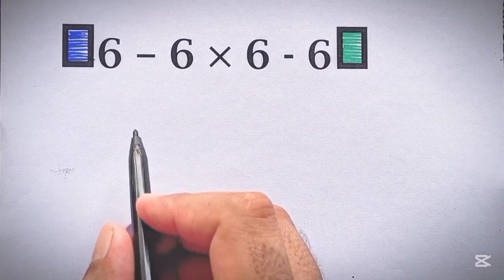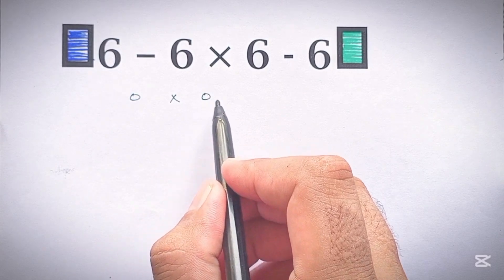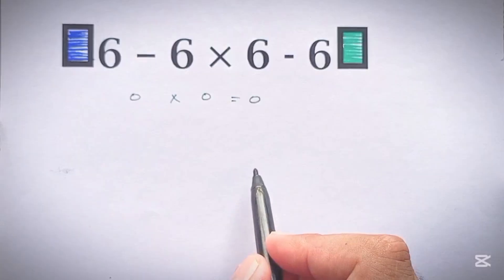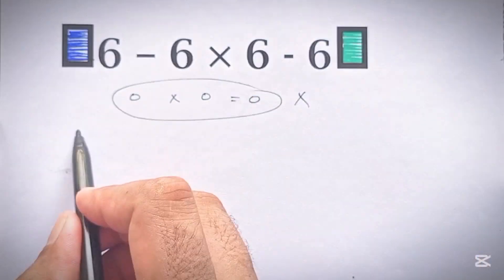Mostly people do it like 6 minus 6 gives us 0 and this 6 minus 6 again is equal to 0, and 0 times 0 gives us just 0. But this answer is not correct.